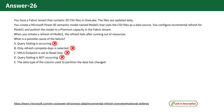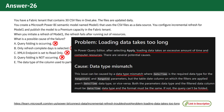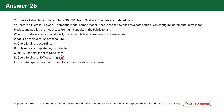Option E: The data type of the column used to partition the data has changed. A mismatch in data types — where datetime is required for the range start and range end parameters, but the table column is not in datetime format — can cause the incremental refresh to fail. Both the parameter data types and the filtered data column must be in datetime format. If not, the query cannot be folded properly, leading to resource exhaustion during the refresh. Given that CSV files do not support query folding, we can confidently rule out option D. The refresh failure for Model 1 is likely due to a data type change in the partition column, making option E the best answer.